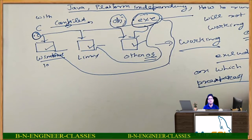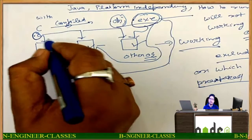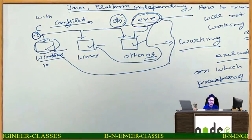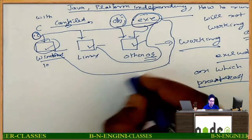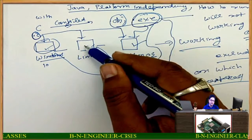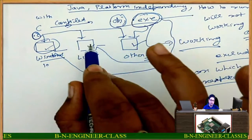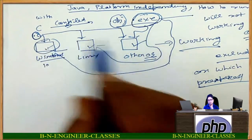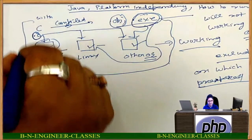The executable file will only work on the platform on which it was prepared. If it was prepared on Windows, the executable will work on Windows only. If compiled on Linux, that file will work only on Linux and not on Windows. This is the case of C.